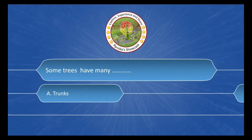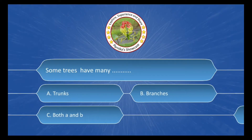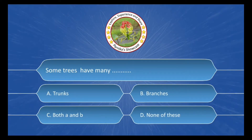Some trees have many ___. The options are: A. Trunk, B. Branches, C. Both A and B, D. None of these. The correct answer is Option B: Branches.